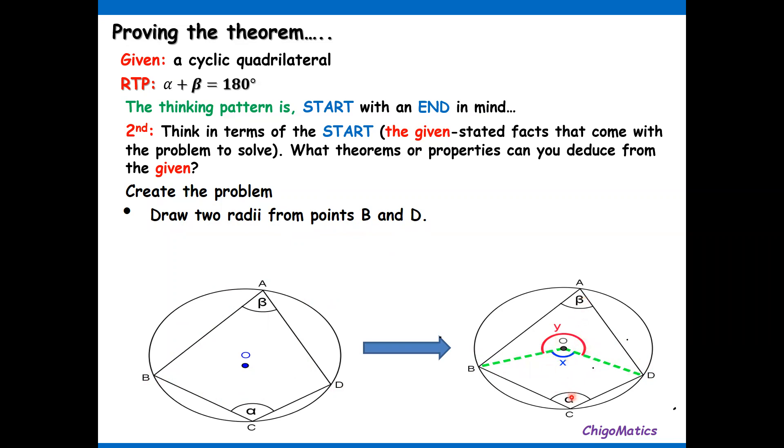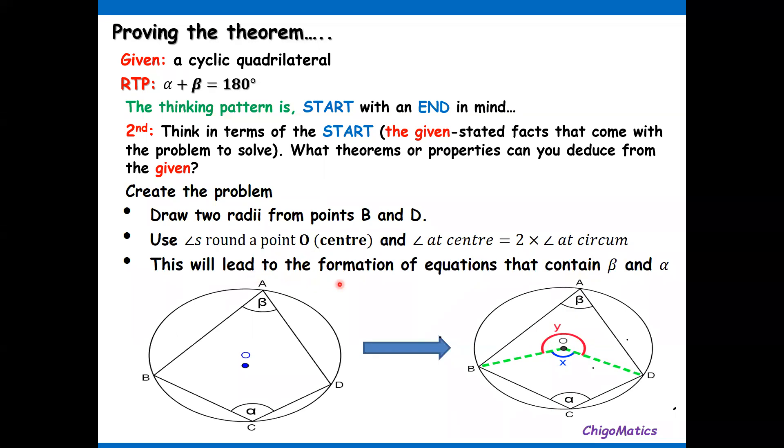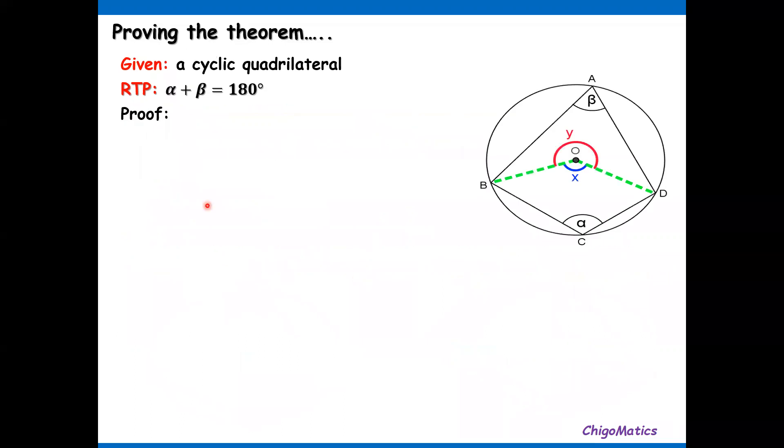Then from there we think of how we could relate now the alpha and beta. Once we have done this, then we think of the theorem: angle at center and angle at circumference. So in such a case, you would realize that y and x complete the angle at a point. So we are going to use that knowledge to come up with the equations. We are saying: use angles around a point center O, and angle at center equals twice angle at circumference. This will lead to the formation of equations that contain beta and alpha. So now here we get out the proof.